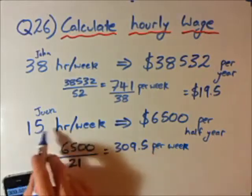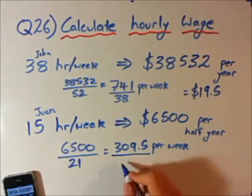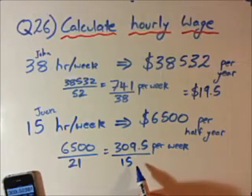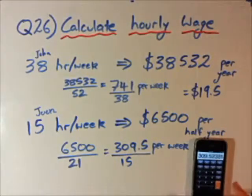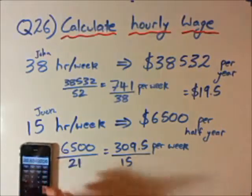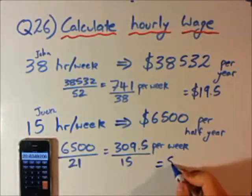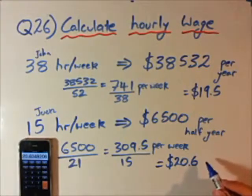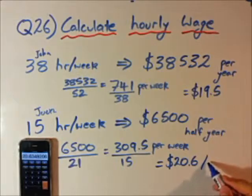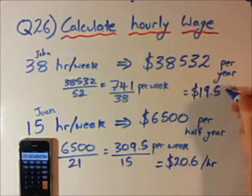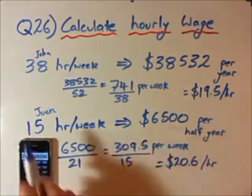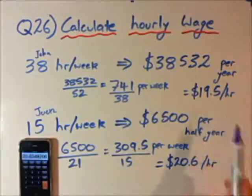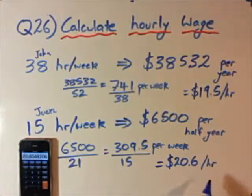Jack works 15 hours per week, so we divide his weekly pay by 15 to get the hourly wage. After calculating, Jack's hourly wage comes out at around $20.60 per hour. So John earns $19.50 per hour and Jack earns $20.60 per hour — Jack earns more than me.